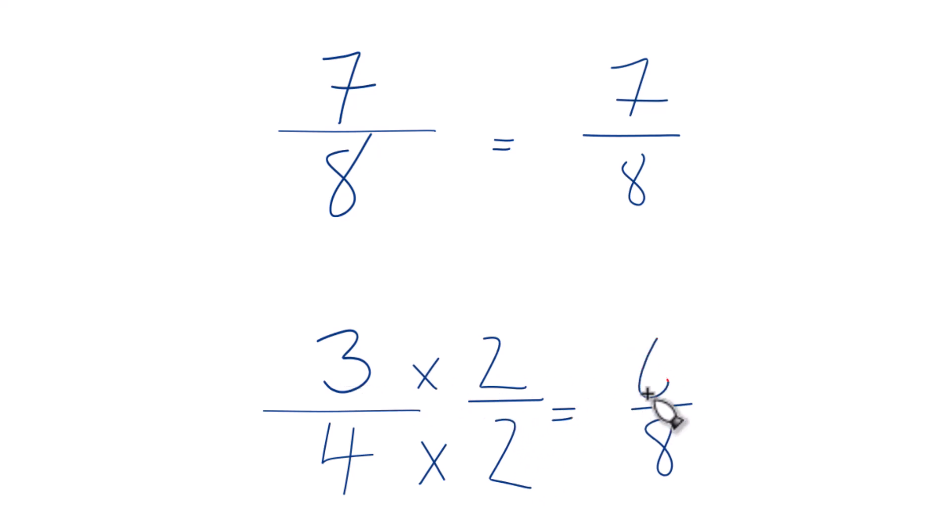3 times 2 is 6, and 6 eighths, that's equivalent to 3 fourths. If you divide 3 by 4 or 6 by 8, you get 0.75. They're the same.